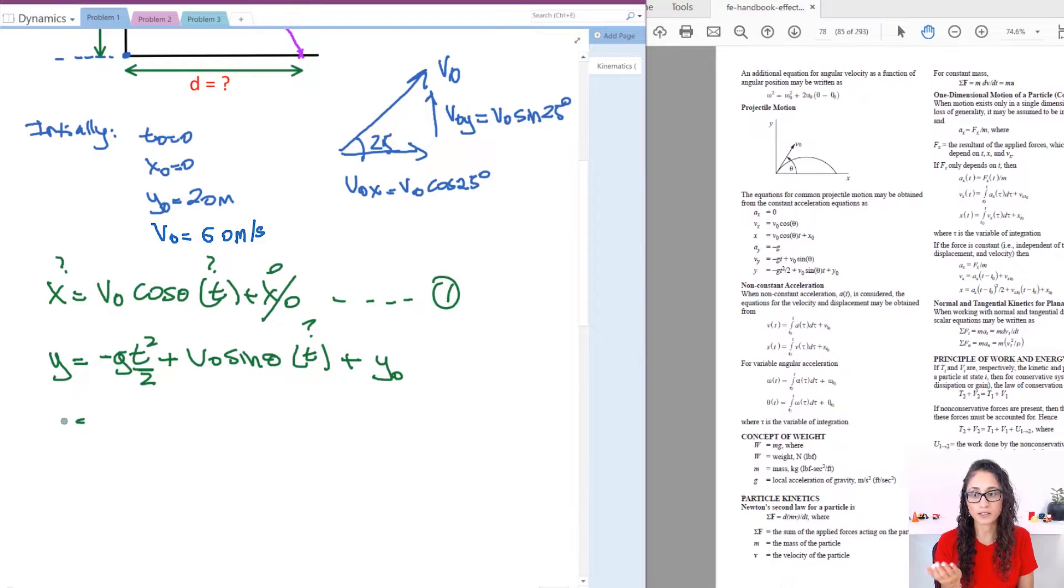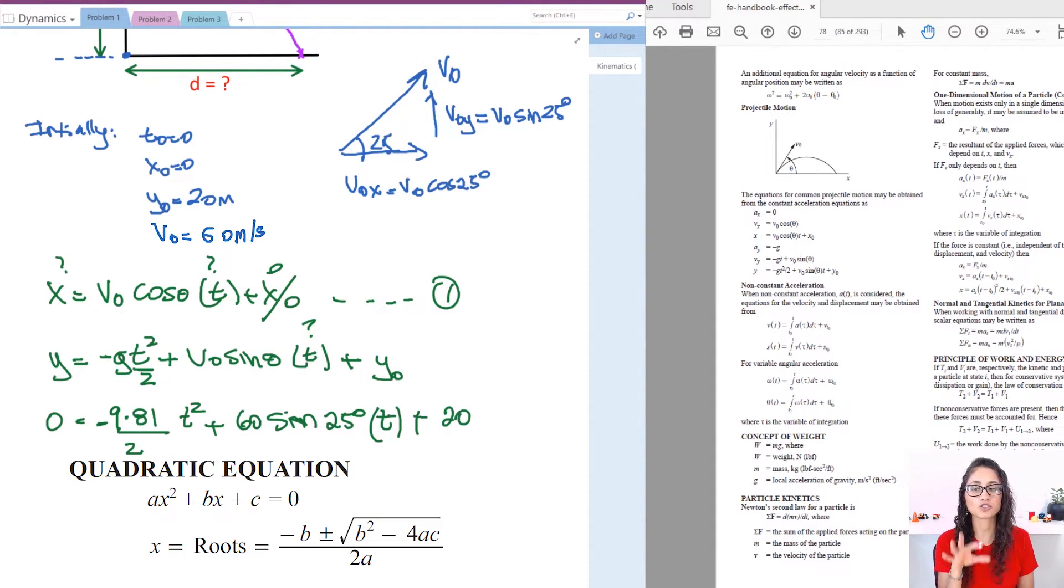So y is equal to zero, like we said earlier, because it's going to land. So it's no more at a height, so it's just zero. g is minus 9.81 divided by 2, t squared plus v0 sine theta. So I have 60 sine theta, and I have sine theta, which is 25 degrees. We're going to leave t plus y0, which is 20. So this is a polynomial equation. So you could either solve it by hand or you could just use the calculator.